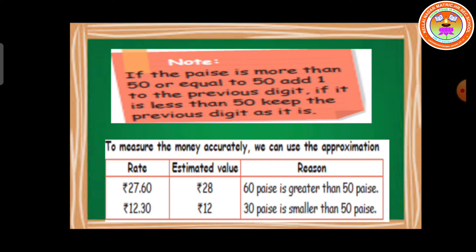The very important thing is: if the paise value is more than 50 or equal to 50, add 1 to the previous digit. If it is less than 50, we have to keep the previous digit as it is, like what we followed in the estimation. To measure the money accurately, we use approximation.